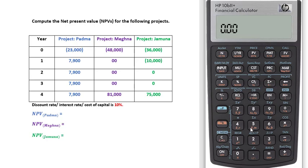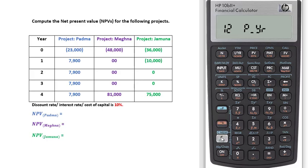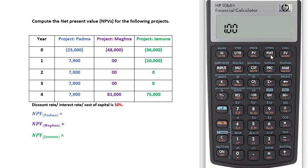Next, check the payment per year setting. Press Shift then C. Currently the calculator is set to 12 payments per year, but we need 1 payment per year, so we have to change it. Press 1, then Shift, then the PMT button — where 'payment per year' is shown in orange. It has now been changed to 1.